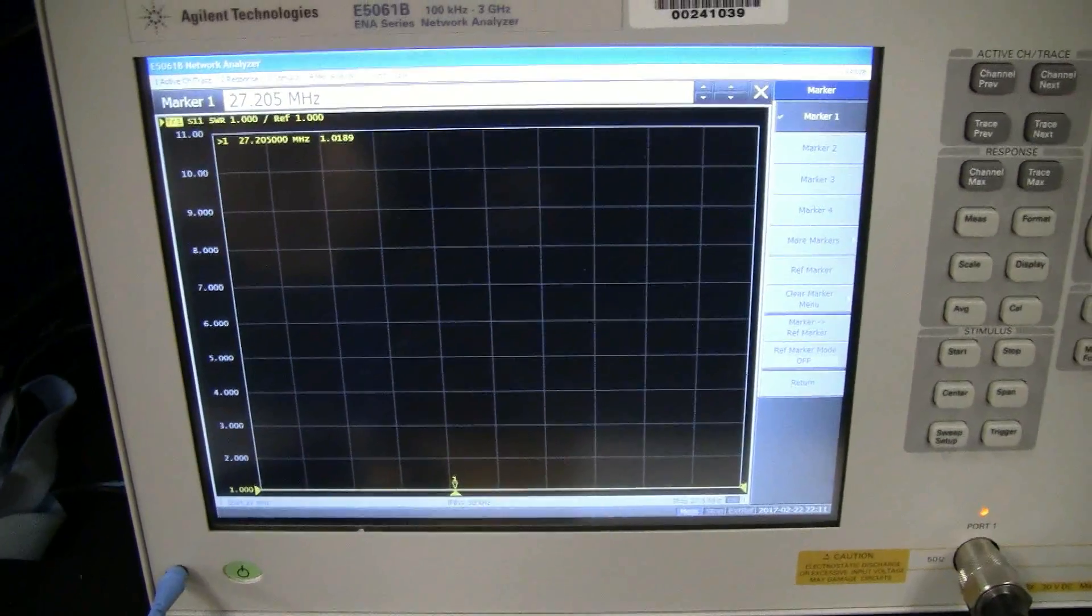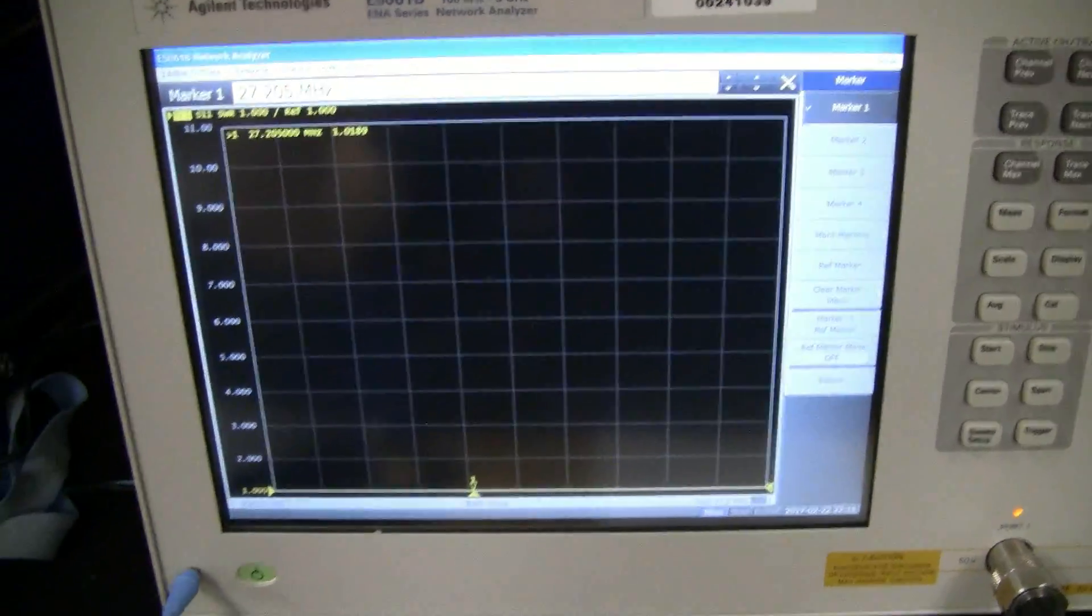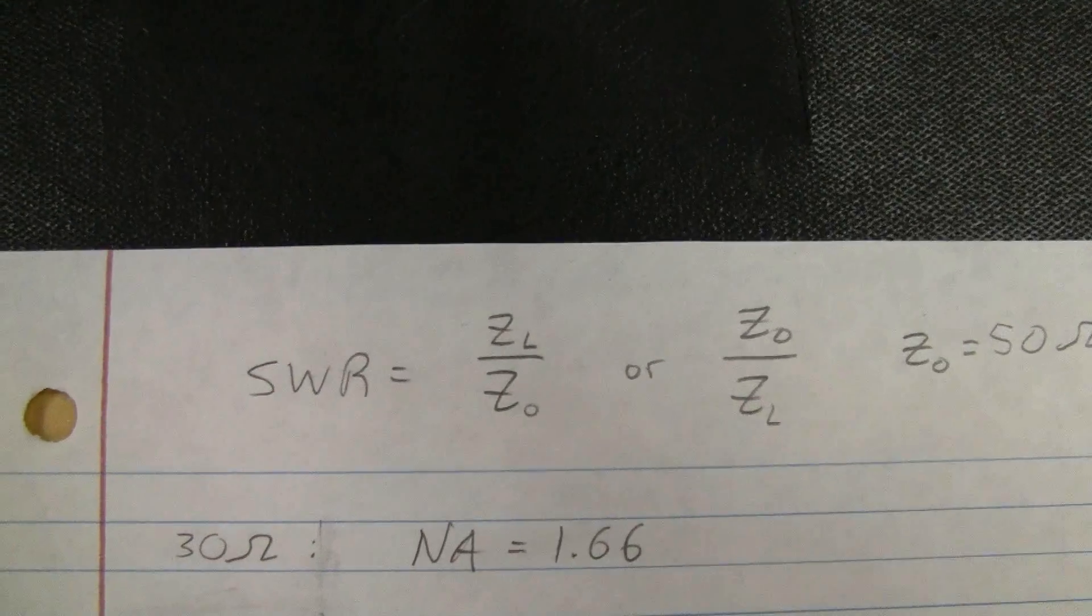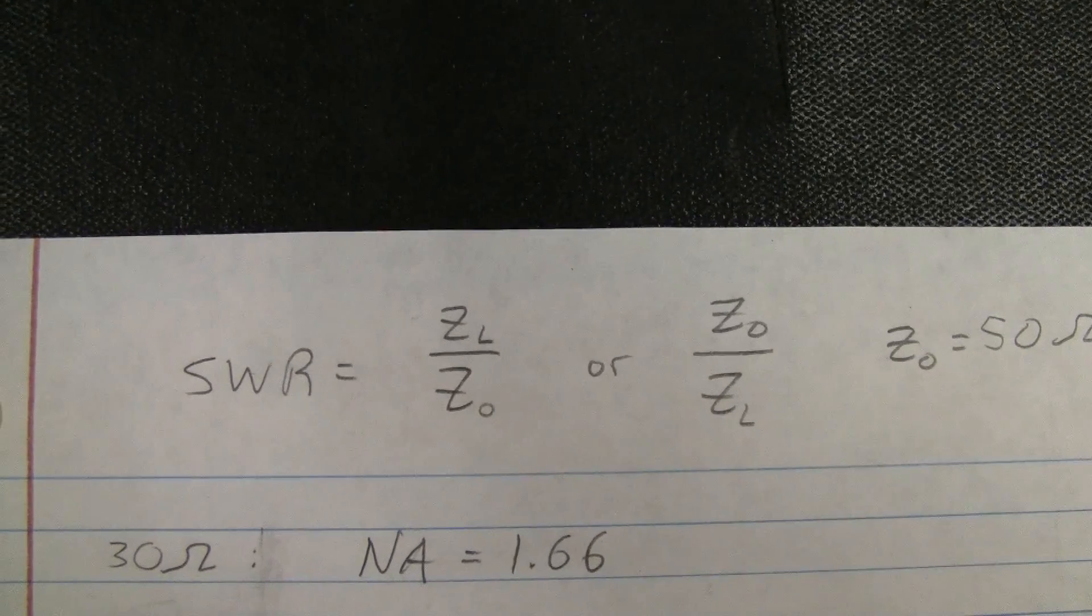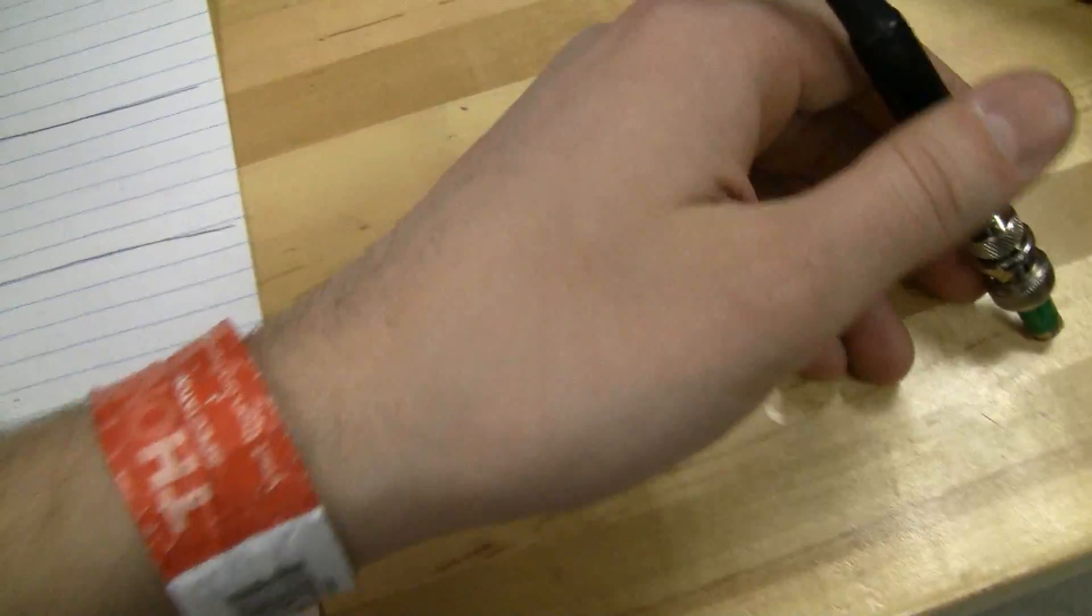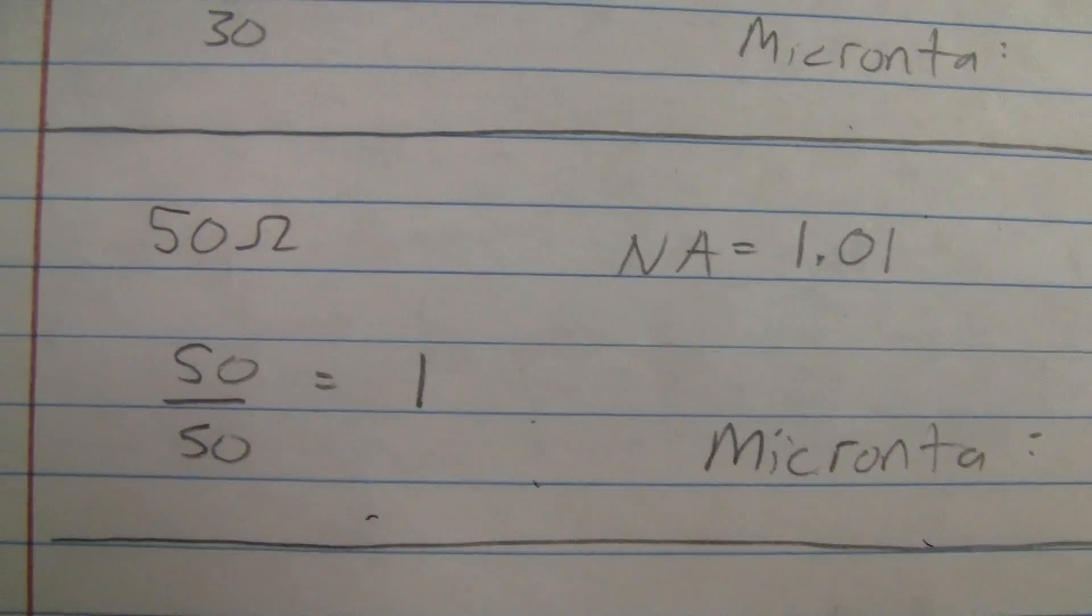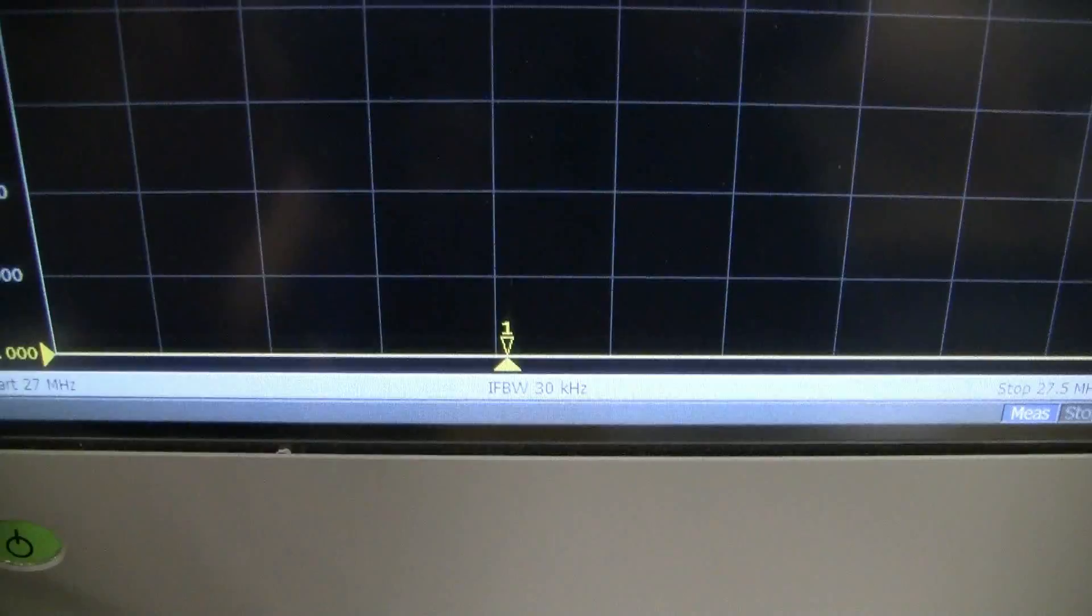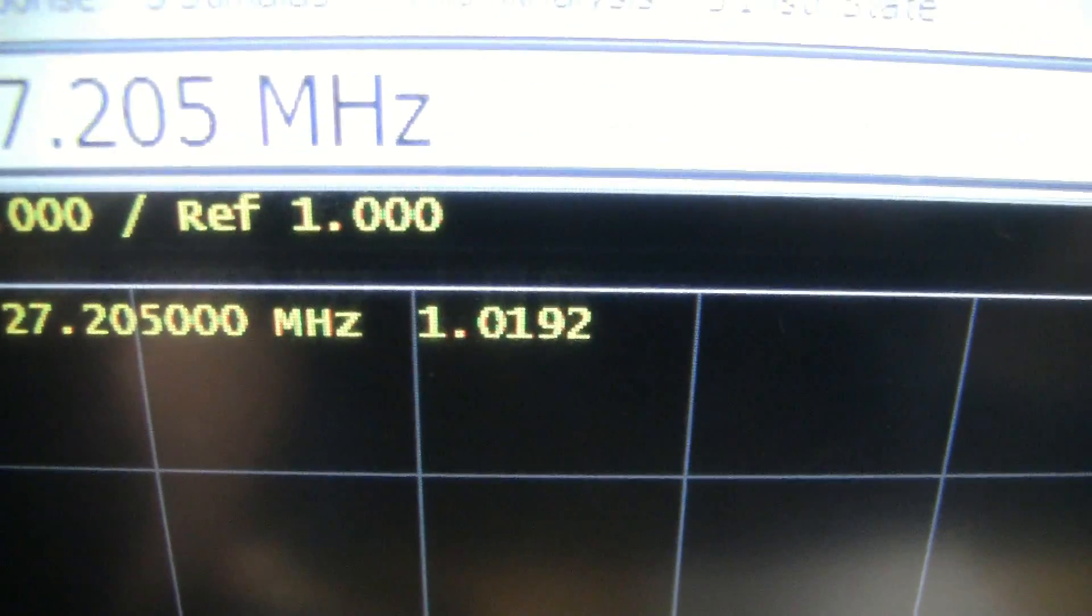The network analyzer creates its own signal and sends it out the wire and then measures the reflected power and calculates SWR. Right now I have it connected to a 50-ohm termination. We expect 50 over 50 or SWR 1. If we come over here to the network analyzer, that's at 27.205 megahertz or channel 20 on CB, we're looking at SWR of 1.01 or thereabouts, just about an SWR of 1 as we'd expect.